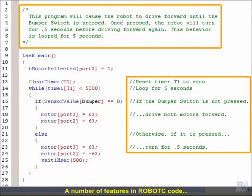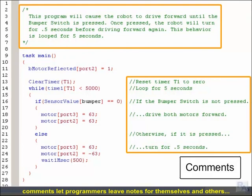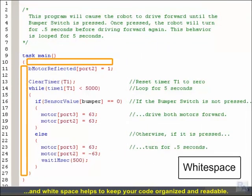A number of features in Robot C code are designed to help the human rather than the computer. Comments let programmers leave notes for themselves and others, and whitespace helps to keep your code organized and readable.